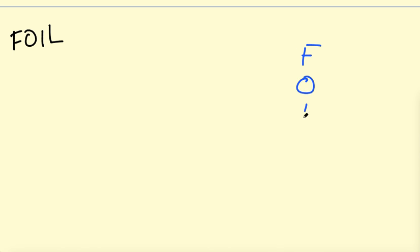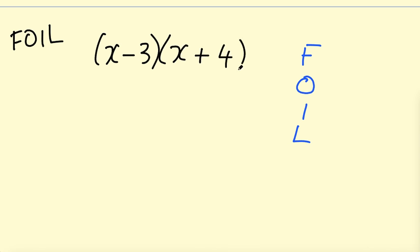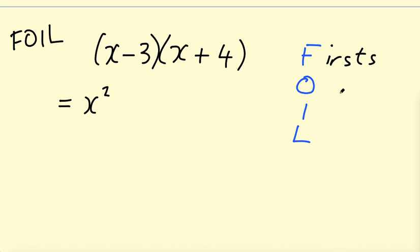The last method is called FOIL — this is my personal favourite. It's actually an acronym. Let's use (X minus 3)(X plus 4). The F in FOIL stands for Firsts — multiply the first terms in each bracket. X is the first term in the first bracket and X is the first term in the second bracket, so X times X gives X squared.